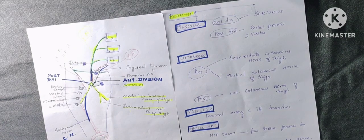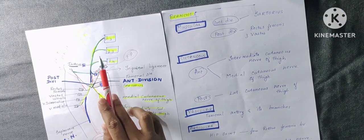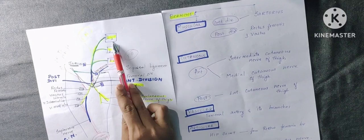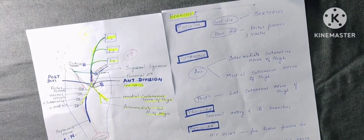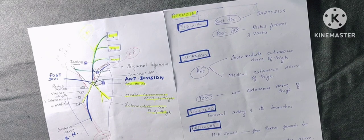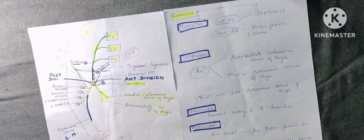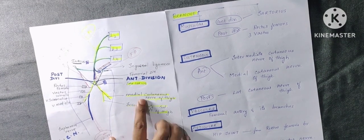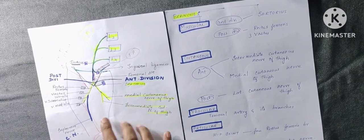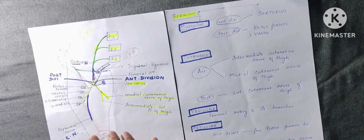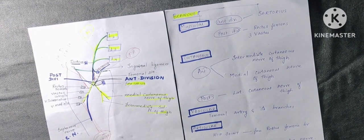Coming to the clinical anatomy: femoral nerve injury can occur due to any intervertebral disc prolapse at the lumbar level, stab injury, gunshot injury, or hip joint dislocation. If there is femoral nerve injury, the muscles of the anterior compartment of the thigh are paralyzed. Additionally, the cutaneous nerve supply is lost, so the patient cannot feel sensation over the anterior compartment region supplied by the femoral nerve.